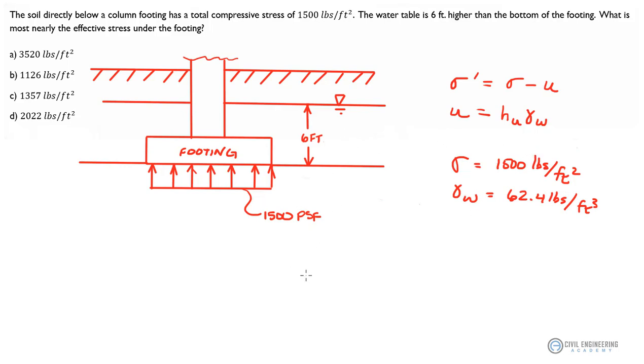The unit weight of water I know is 62.4 pounds per cubic foot, and I know my depth. Let's see if we can't get at this. So if I say that my effective stress or my sigma prime equals my total stress, 1,500 pounds per foot squared, minus my pore water pressure.